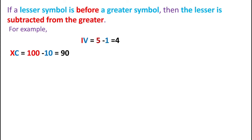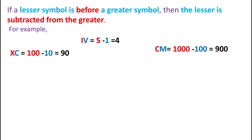Similarly, the value for XC: here X is smaller than C, with X equals 10 and C equals 100. Whenever a lesser symbol is before a greater symbol, we apply subtraction. So 100 minus 10 gives us 90. Similarly, for CM, we get 900.